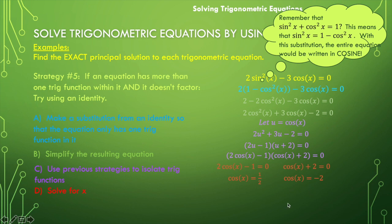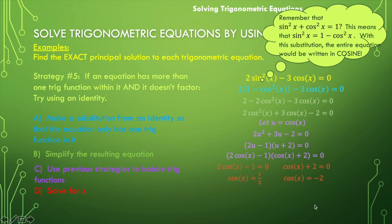Now let's solve each of these equations. Cosine of x is equal to one half — this is asking where on the unit circle are my x coordinates one half. That's going to happen at pi over three and five pi over three. Now cosine of x is equal to negative two — we have a problem there. Remember, the cosine function has a range of negative one to positive one, so there's nowhere that I'm going to have an output equal to negative two. That's out of range. So our entire solution set is pi over three and five pi over three.